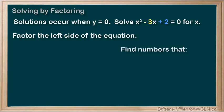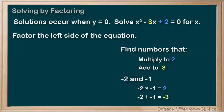Let's find two numbers that multiply to positive 2 and add to negative 3. What about negative 2 and negative 1? Negative 2 times negative 1 equals 2, and negative 2 plus negative 1 equals negative 3. Wonderful. So x squared minus 3x plus 2 factors into x minus 2 times x minus 1.